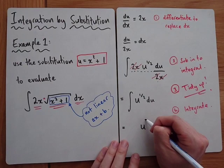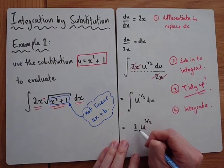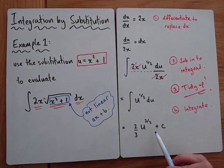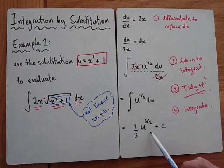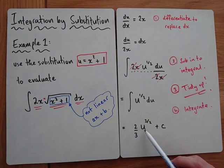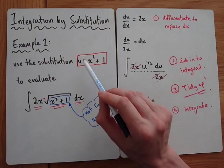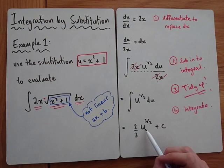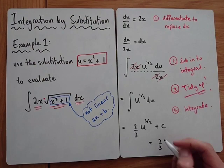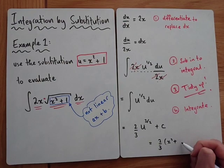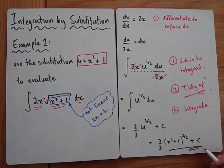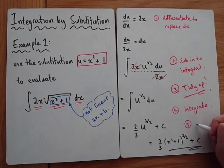Integrate with respect to u: add 1 to the power, divide by the new power. Dividing by 3/2 means multiplying by 2/3. Don't forget plus c. The last important step: once we've integrated using the substitution, we have to write the answer back in x. So that gives us 2/3 times u — which is x squared plus 1 — to the power 3/2, plus c. Finally, write back in terms of x.